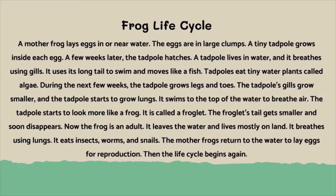During the next few weeks, the tadpole grows legs and toes. The tadpole's gills grow smaller and the tadpole starts to grow lungs. It swims to the top of the water to breathe air. The tadpole starts to look more like a frog — it is called a froglet. The froglet's tail gets smaller and soon disappears.